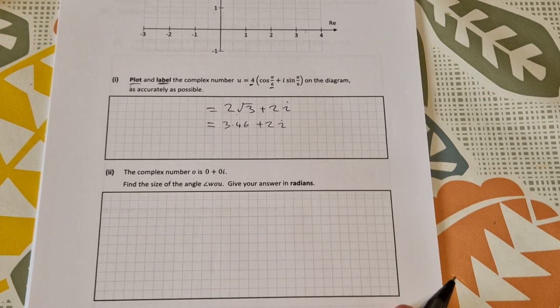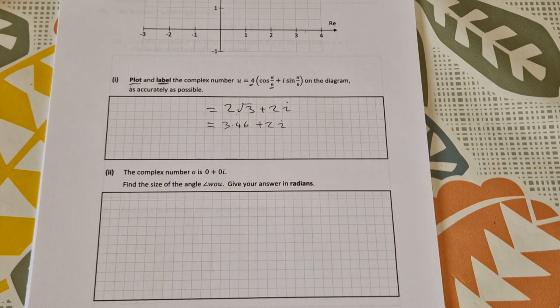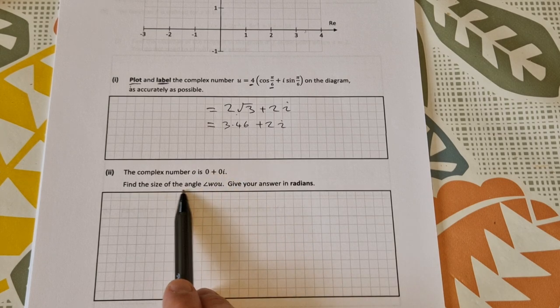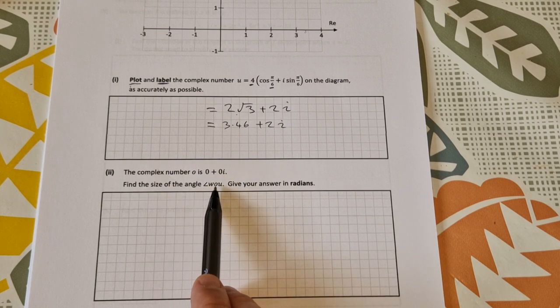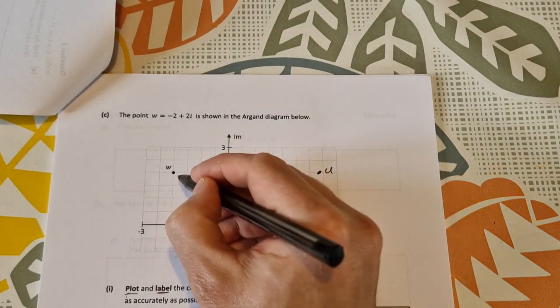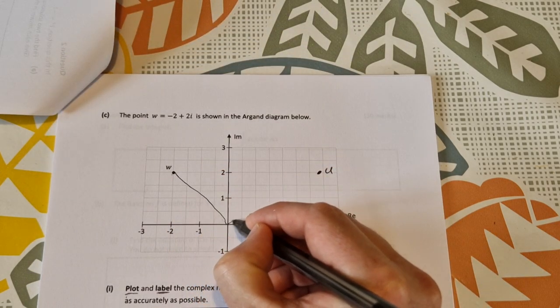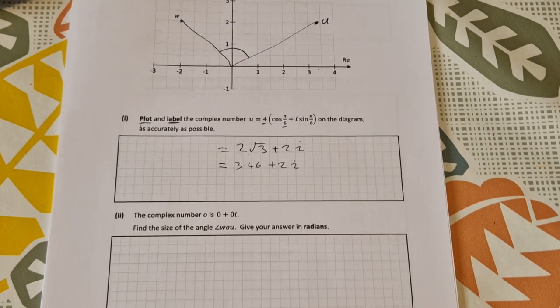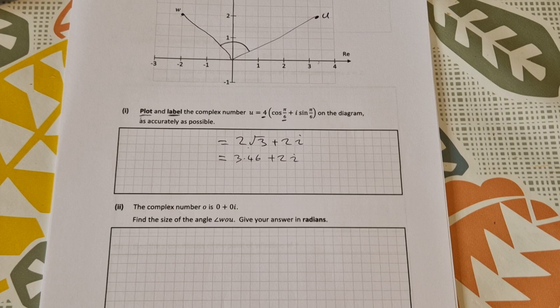And then the second part of this one, the complex number o is 0 plus 0i, find the size of the angle w, o, u, so that's this angle here, w, o, u. This angle here, and give your answer in radians.